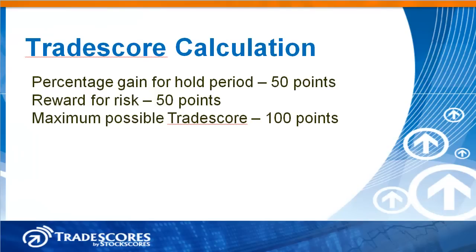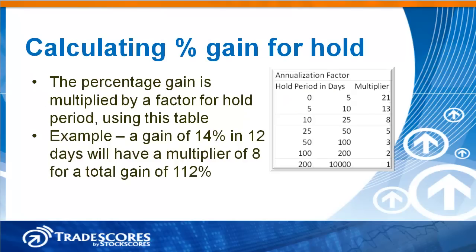The Trade Score calculation is based on two components. The percentage gain for hold period is worth 50 points, and the reward you earn for the risk you take is also worth 50 points. We add up each of these scores for a maximum possible Trade Score of 100 points.